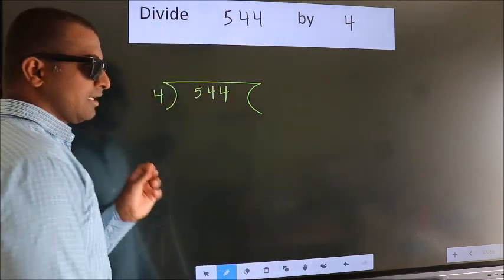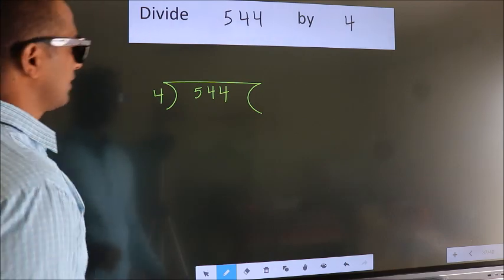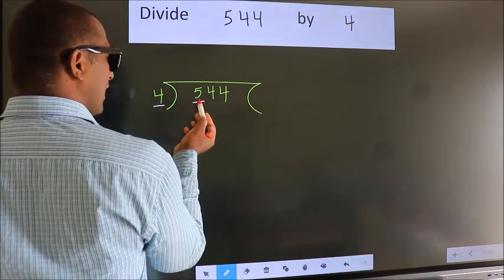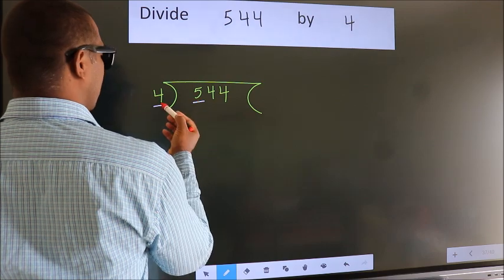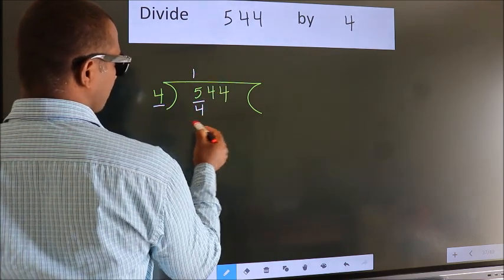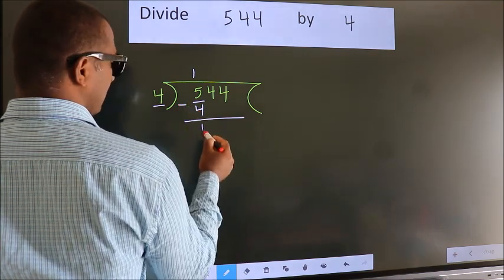This is your step 1. Next. Here we have 5, here 4. A number close to 5 in 4 table is 4 once 4. Now, we should subtract. We get 1.